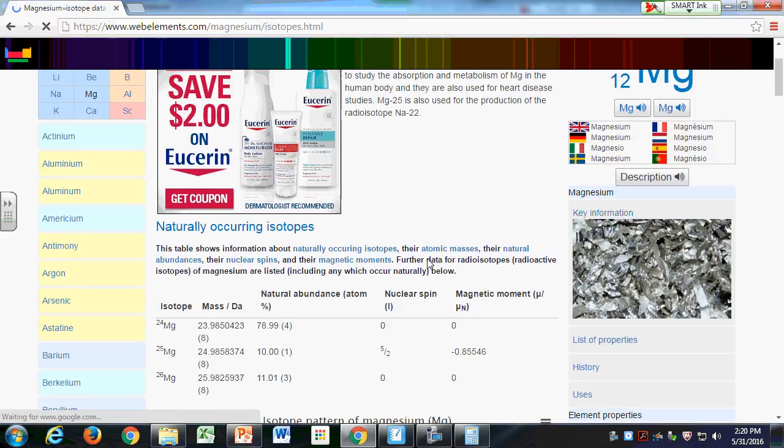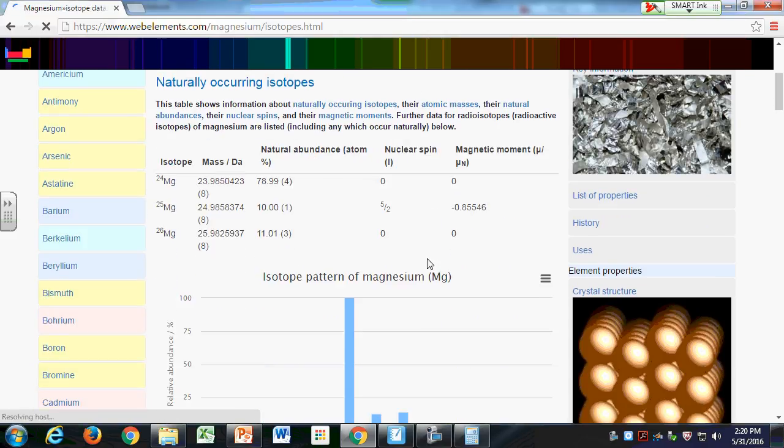Here in isotopes you can see magnesium-24 has a mass of 23.9850423 u. But if you round that off to the nearest tenth, 23.985 rounds off to 24.0, which is what the mass number is, 24.